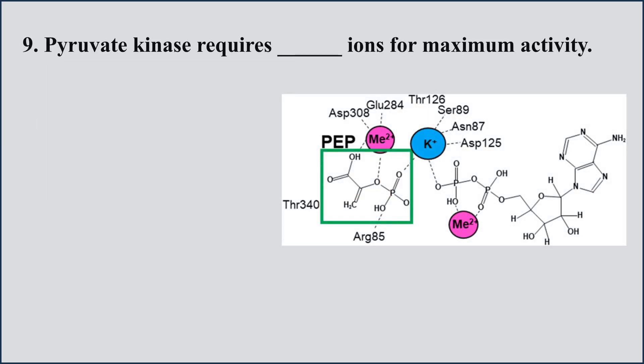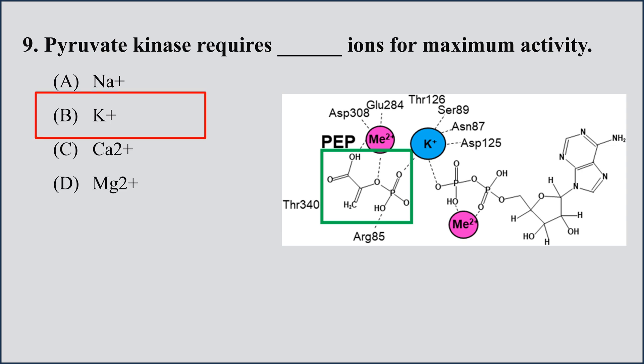Question number 9: Pyruvate kinase requires which ion for maximum activity? A) sodium, B) potassium, C) calcium, D) magnesium. The right option is potassium. Pyruvate kinase is required in the last step of the glycolytic pathway, in which phosphoenolpyruvate is converted into pyruvate. Pyruvate kinase requires the potassium ion for its activity.